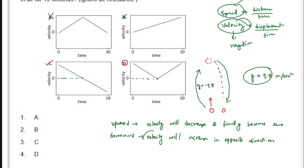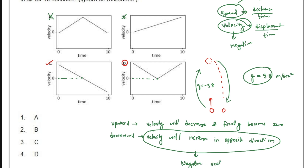When the ball comes downward, the velocity will be negative — it increases with a negative sign. When thrown upward, velocity decreases from, say, 4 to 0. Then coming down, it increases from 0 to −1, −2, −3, −4. The direction has changed, so the sign of the velocity changes. That is why option C is correct — the velocity decreases to zero, then increases in the negative direction.